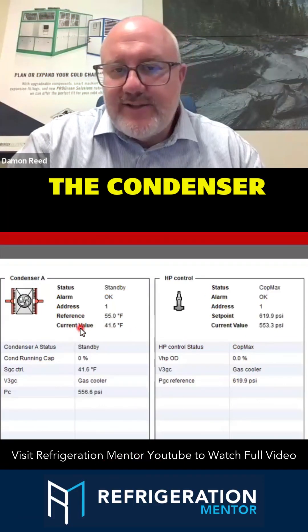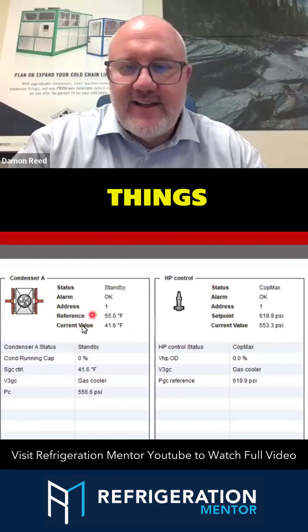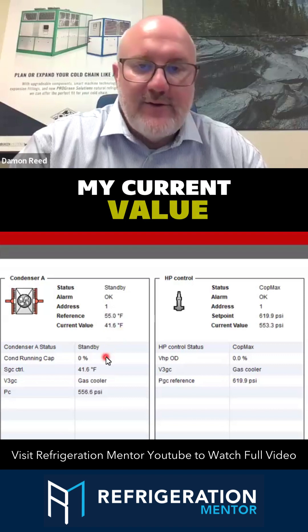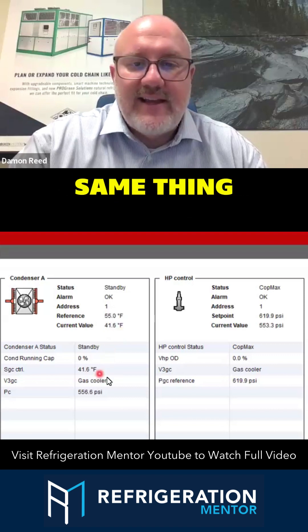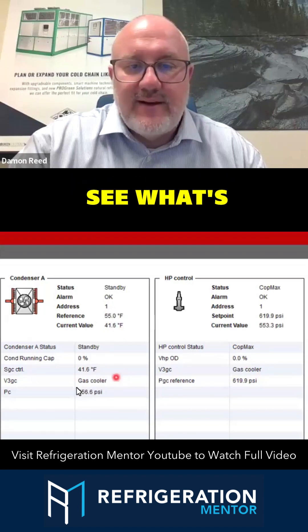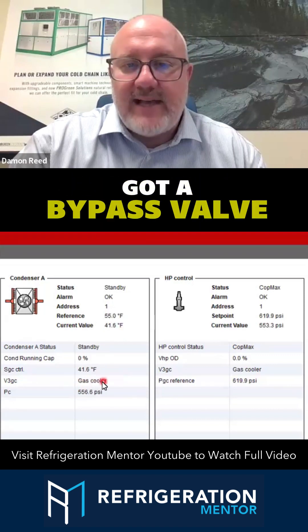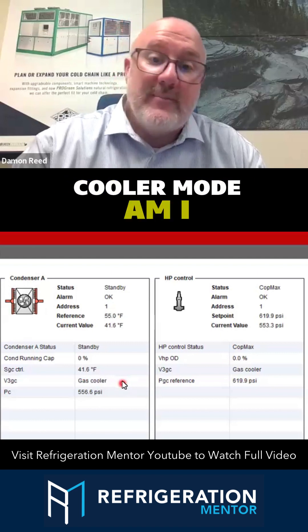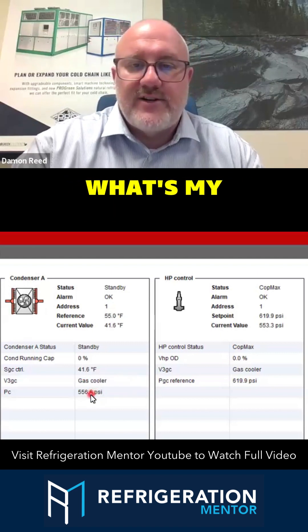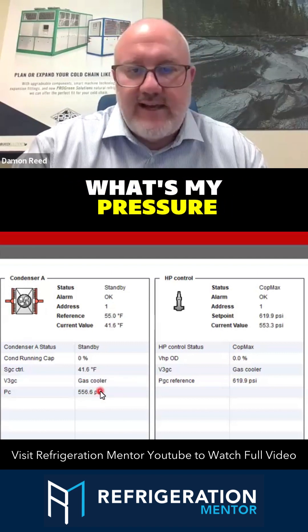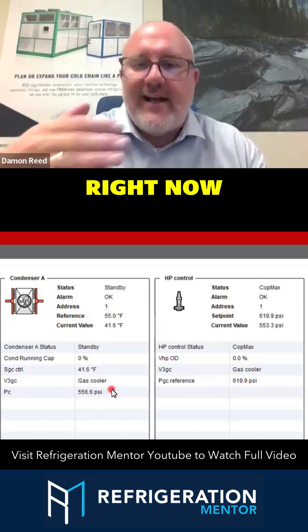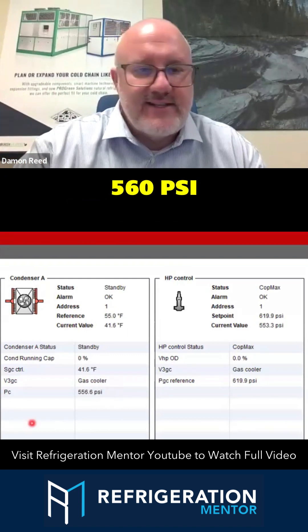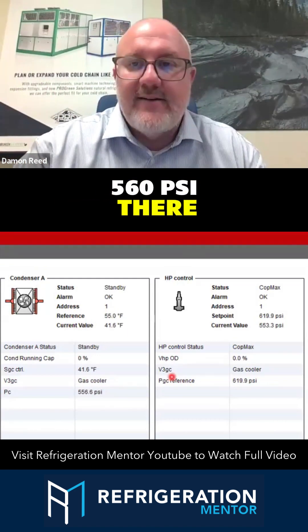Jumping over to the condenser side of things — everything's happy. I can see my reference and current value. If I've got a bypass valve, I can see am I in gas cooler mode or bypass mode, and what's my pressure. Right now I'm sitting idle, and I don't mind seeing 560 PSI there.